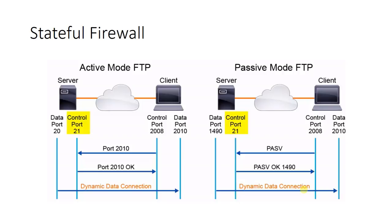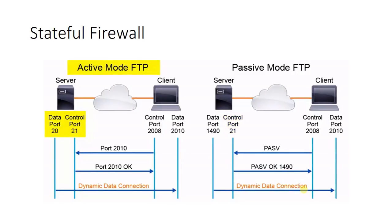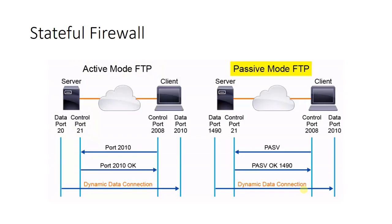Stateful firewalls can provide inspection of control channel applications. With FTP, a client connects to the server on TCP port 21, which is the control channel. There are two FTP modes: active mode and passive mode. In active mode, the server responds to the client request on port 21 with a connection on port 20. In passive mode, the client requests a connection and the server responds with a port number, and the client initiates the dynamic connection using the server-provided port.